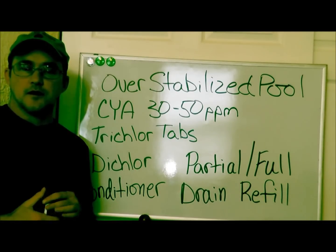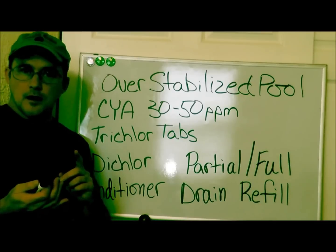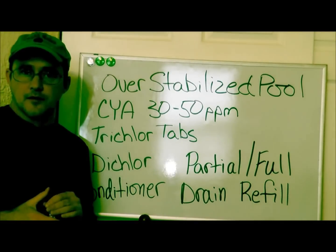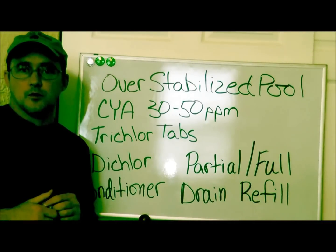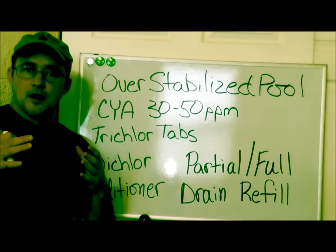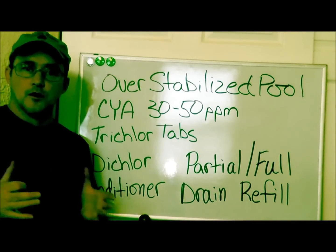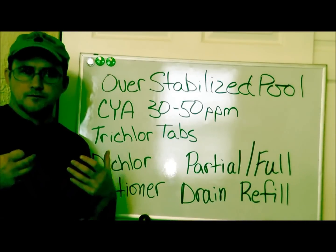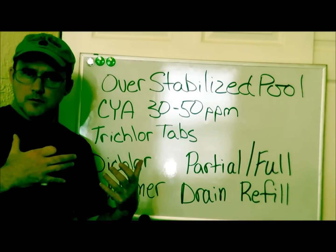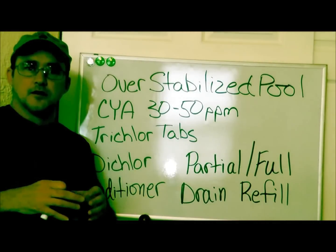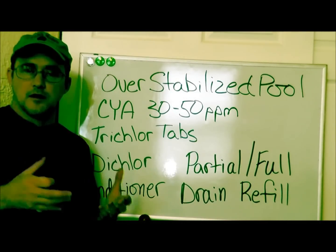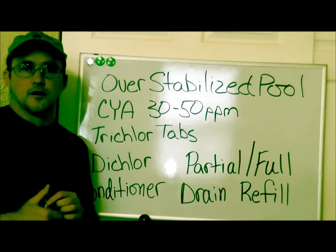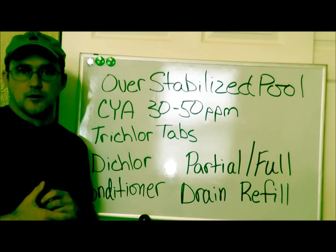Stabilizer is the conditioner for your water — cyanuric acid, conditioner, stabilizer — it's pretty much all the same thing. You probably chlorinate your pool with an unstabilized form of chlorine, liquid or granular. The stabilizer helps the chlorine become active for a longer period of time because the sun, the heat, and use of the pool can chew up the chlorine very quickly, so you need to get some stabilizer in there.